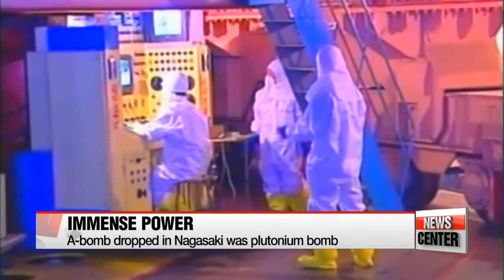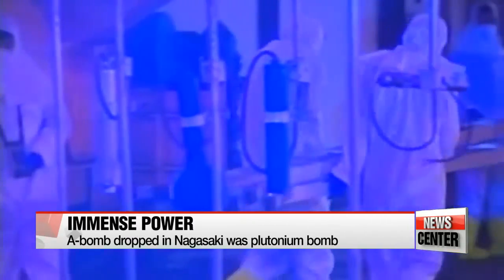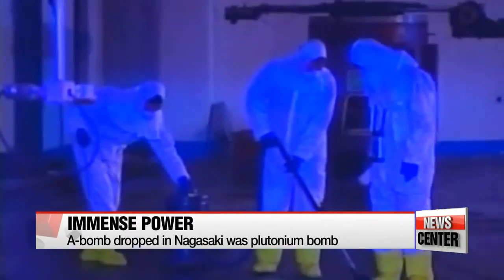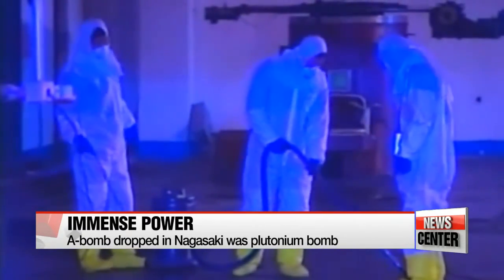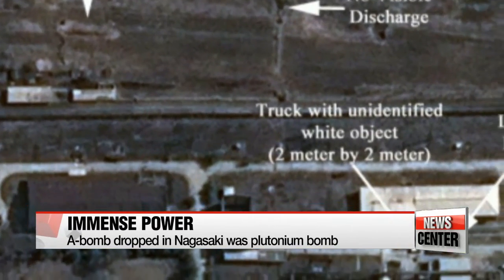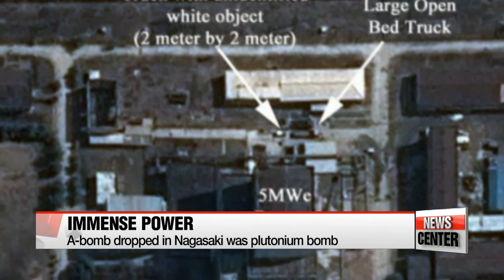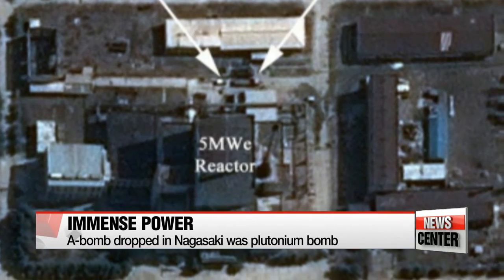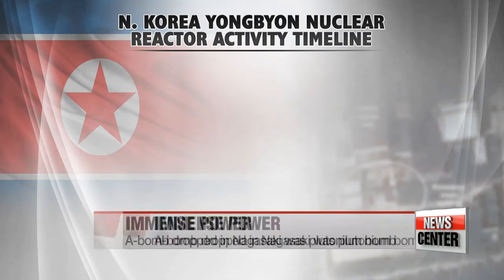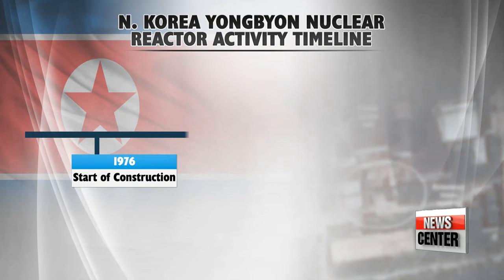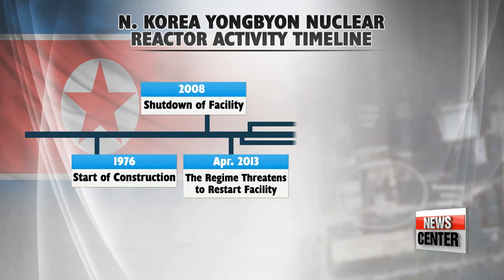North Korea is known to be able to acquire fissile material for making nuclear weapons by reprocessing weapons-grade plutonium in its Yongbyon complex, which runs a 5-megawatt graphite-moderated reactor. After starting construction of the facility back in 1976, North Korea temporarily destroyed a water-cooling tower at the facility in a bid to meet the obligations it agreed to during the six-party talks of 2007.